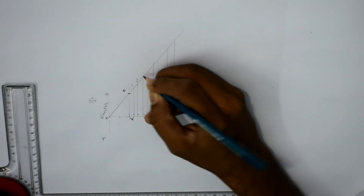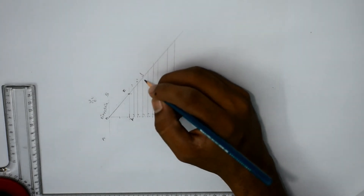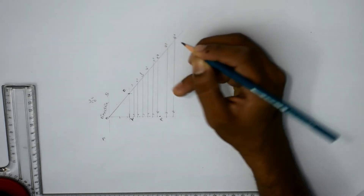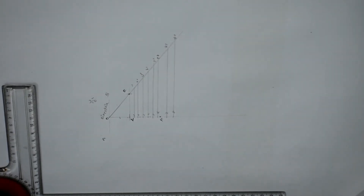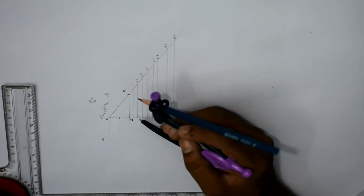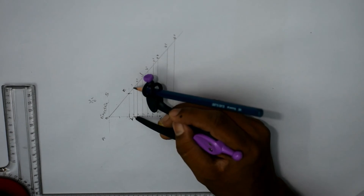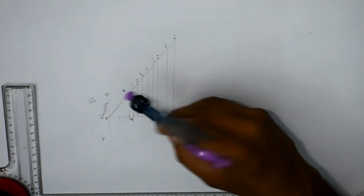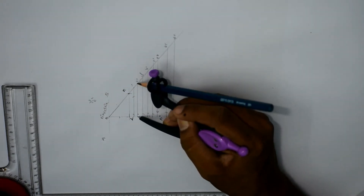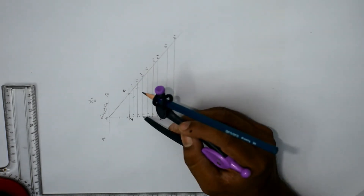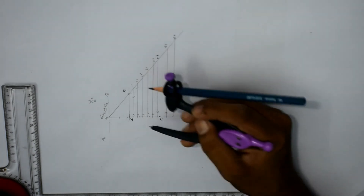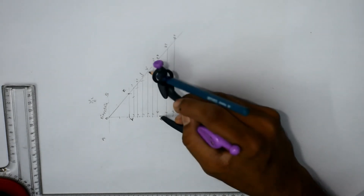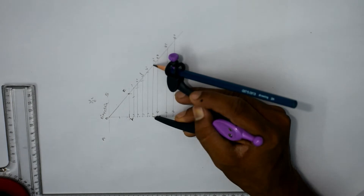Using the same procedure: with 1 and 1-dash as radius and F as center, we cut the first line. With 2 and 2-dash as radius and F as center, we cut the second line. With 3 and 3-dash as radius and F as center, we cut the third line. We continue this for each and every line.